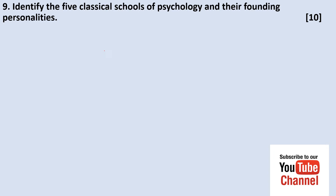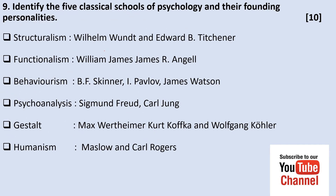Number nine: identify five classical schools of thought and their founding personalities. Structuralism — William Wundt and Titchener. Functionalism — William James and James Angell. Behaviorism — B.F. Skinner, Ivan Pavlov, and Watson. Psychoanalysis — Sigmund Freud and Carl Jung. Gestalt — Max Wertheimer, Kurt Koffka, and Wolfgang Köhler. Humanism — Maslow and Carl Rogers.